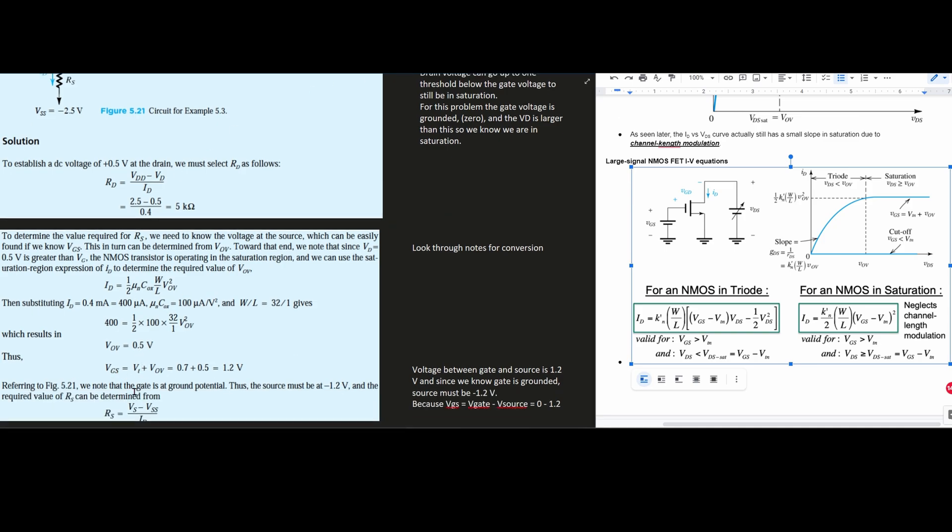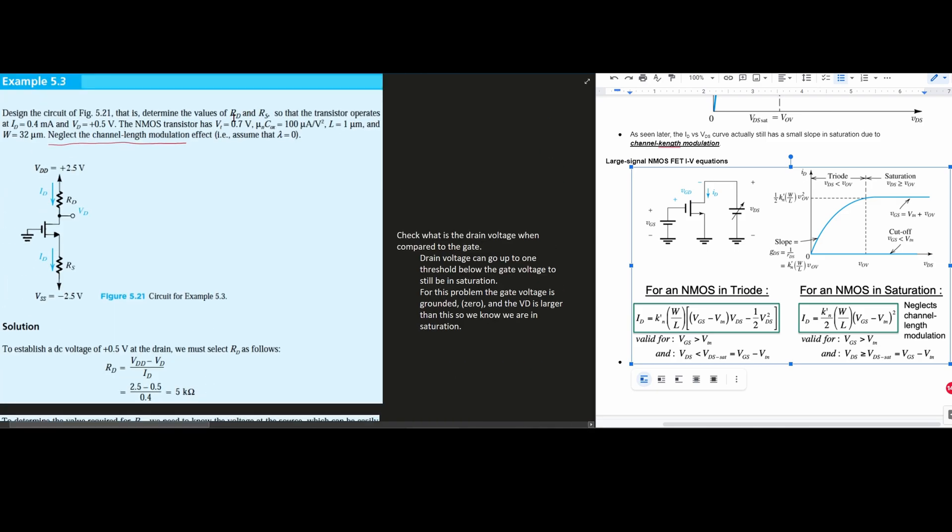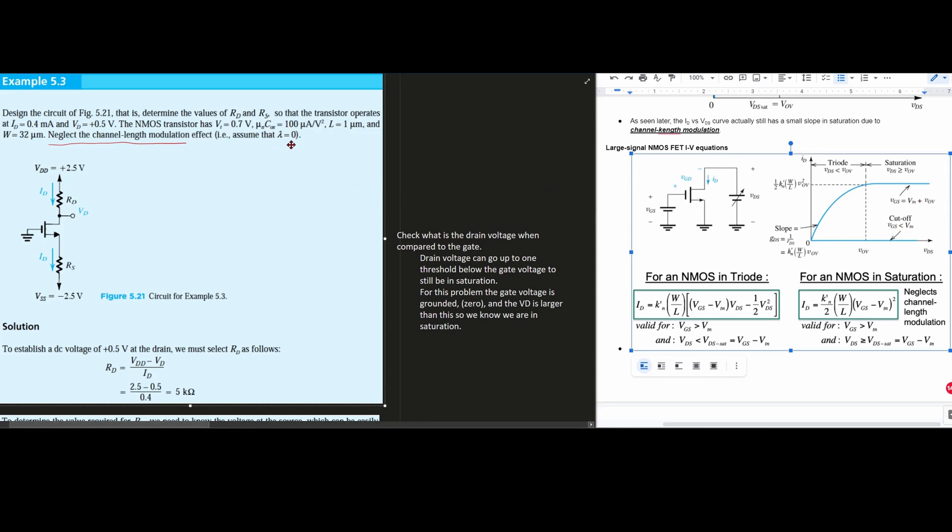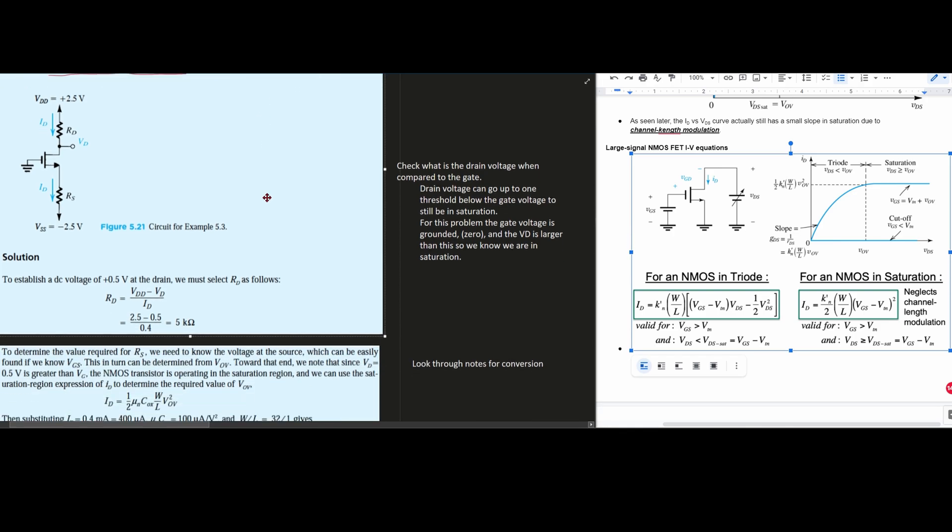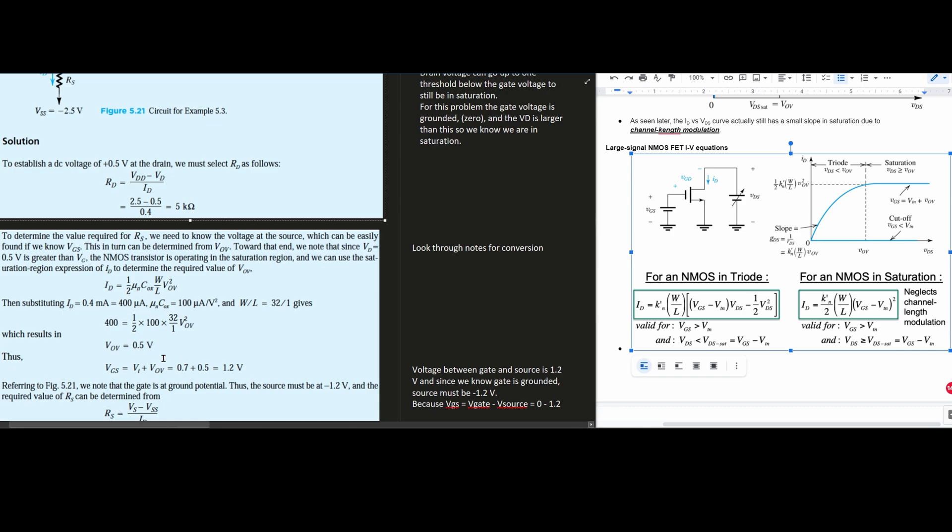Thus our VGS, that's what we want to find. VGS is equal to, if we look at this equation, our VT plus our overdrive voltage. So VGS equals, our VT is given as 0.7 volts. The NMOS transistor has a VT of 0.7 volts. We have to look at what we're looking at very carefully. We just need the T, so that's 0.7. Then we have our overdrive voltage we just found to be 0.5. So we're going to get 1.2 volts for VGS.